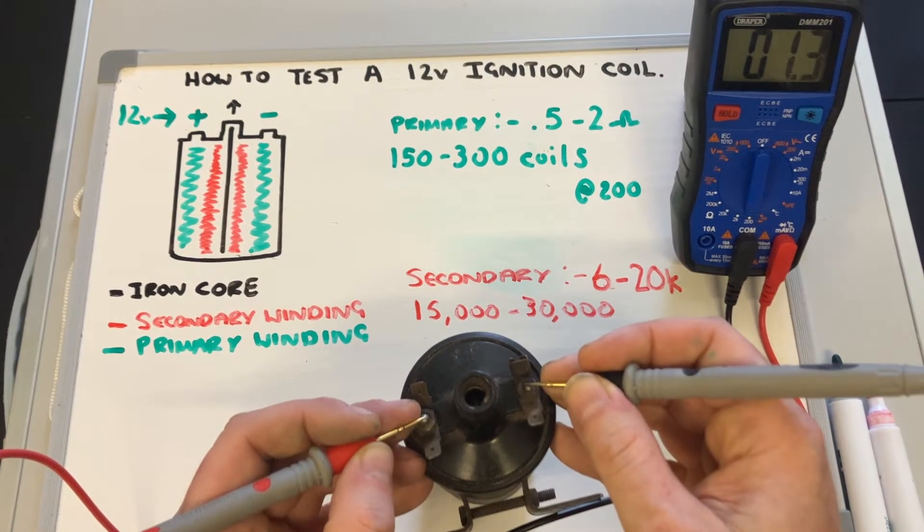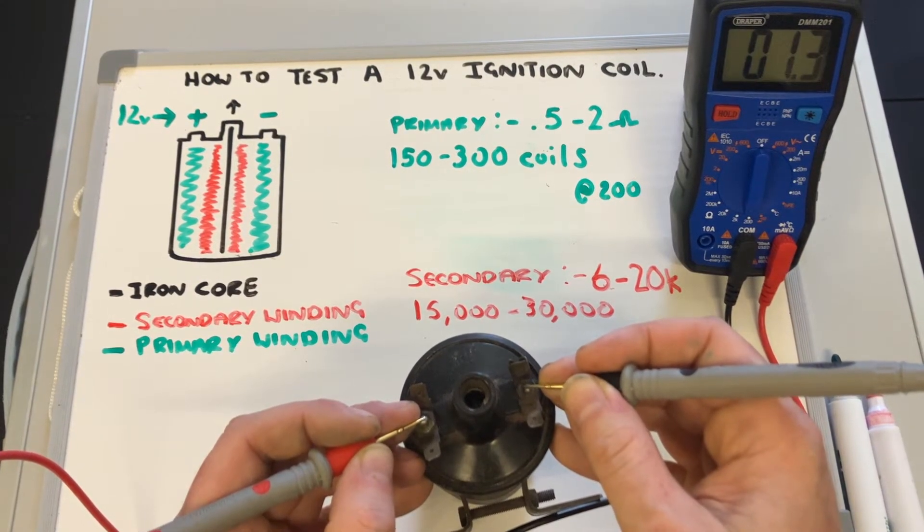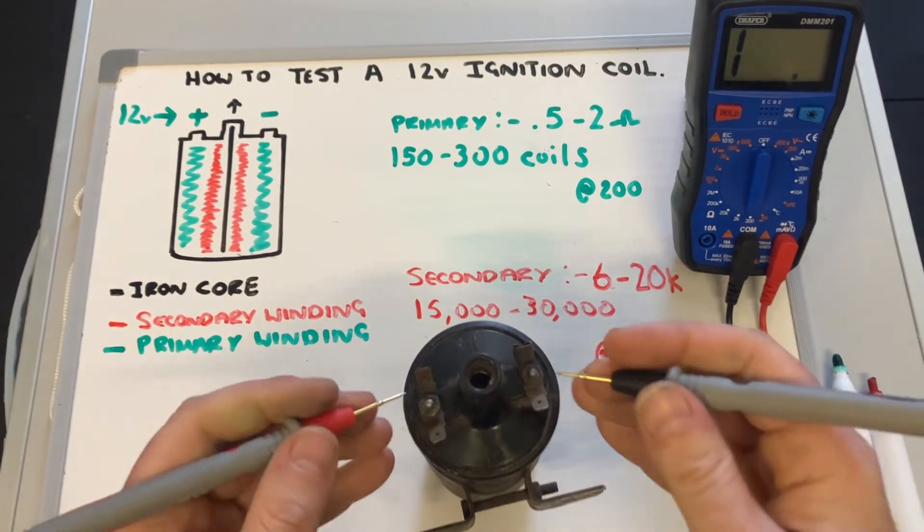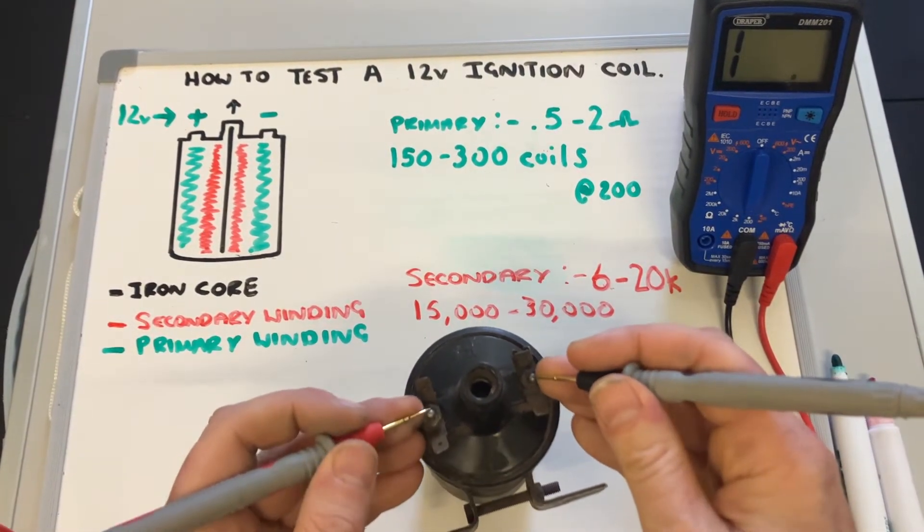As I've shown on the whiteboard here, I'm looking for between 0.5 and 2 ohms to be within spec.